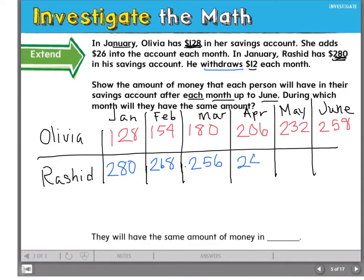Subtract 12 more to find May, $232. And subtract 12 more to find June, $220. Now I can tell in which month they will have the same amount. In May, they will both have $232 in their account. So they will have the same amount of money in May.